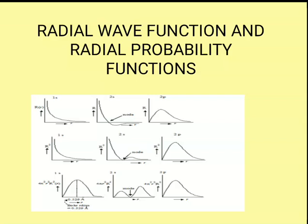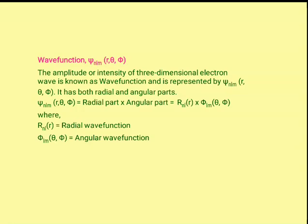The radial wave function only depends on the distance, whereas the angular wave function depends upon two quantum numbers, L and M — the azimuthal quantum number and the magnetic quantum number. So psi can be rewritten as the product of the radial part and the angular part. The radial part only depends on R, and the angular part depends on L and M.